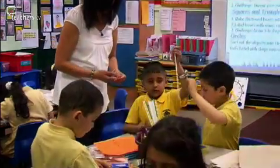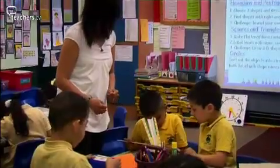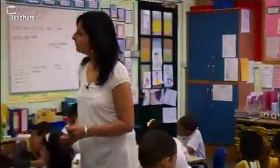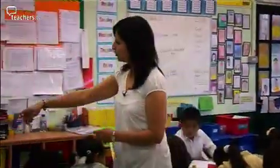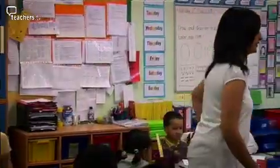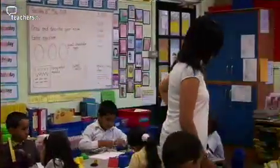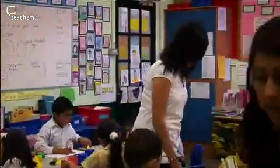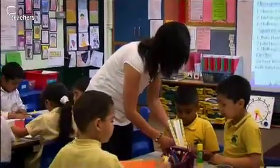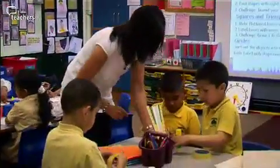A child asks: 'Is it a cube? Is it a cuboid?' The teacher says: 'Let's double check.' The trainer notes she has 'radar ears' — she's monitoring that group while helping another. She confirms: 'So it is a cube — you can get a label. Write cube on it and stick it on there. Then you need to label the corners and the straight edges.'